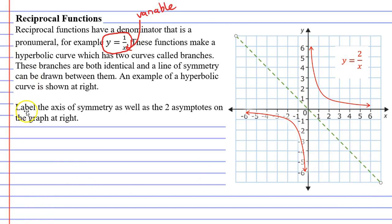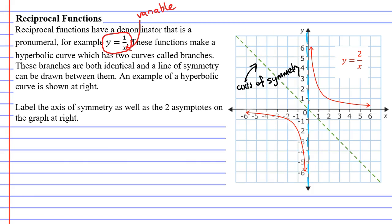This branch is symmetrical to the other branch over the dotted line. We are asked to label the axis of symmetry, which we did in green. We are also asked to label the two asymptotes on the graph at right. I'm going to label one in blue. One of the asymptotes is on the y-axis, and we can see that our branches approach it from either side. They never touch it and they never cross over this asymptote.